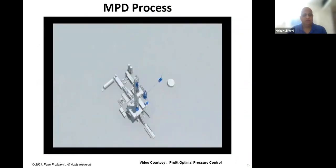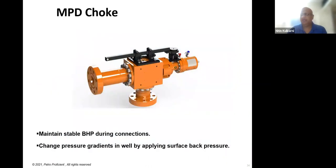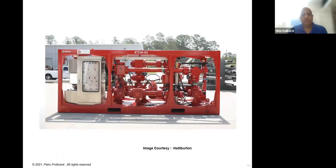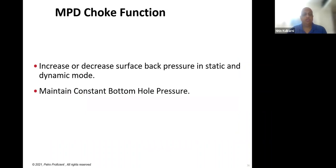The choke manifold — physically, the internals move to maintain constant bottom hole pressure during connections. By moving the internals, you get an option to adjust the pressure. The entire manifold contains chokes, but also many gate valves to redirect flow from choke one, choke two, or choke three as needed. The function of the choke manifold is to increase or decrease pressure from surface in either static or circulating mode to maintain constant bottom hole pressure.